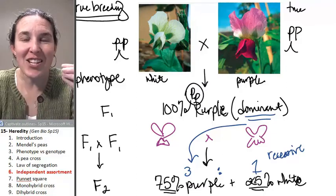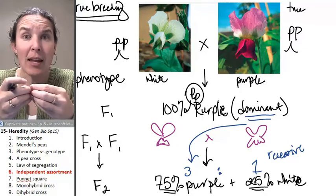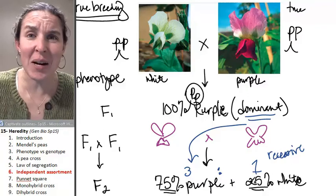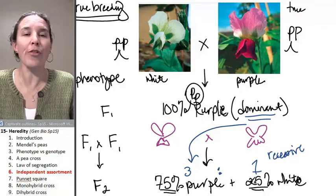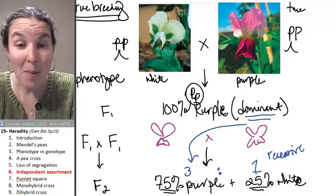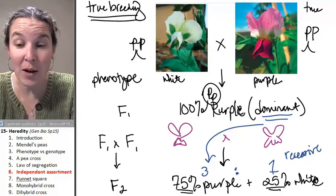Segregation, the law of segregation, is that we actually separate alleles during meiosis. This whole thing can be explained by the process of meiosis, which again, Mendel did not know about this whole process.